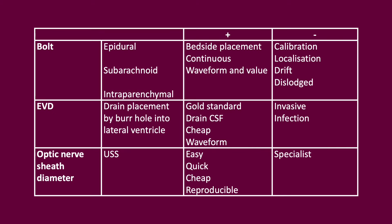There are multiple practices for assessment of ICP. Examples include an ICP bolt, an EVD and also an optic nerve sheath diameter assessment. The EVD is the gold standard approach for the measurement of ICP as it allows re-zeroing of the pressure transducer as required. However, it is extremely invasive and therefore has associated complications.